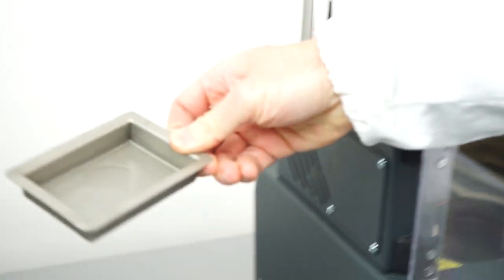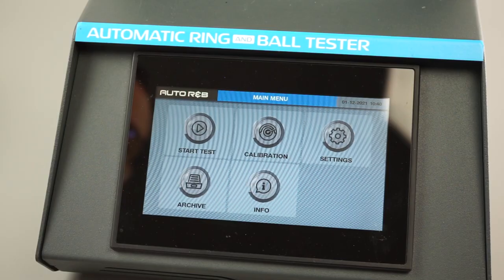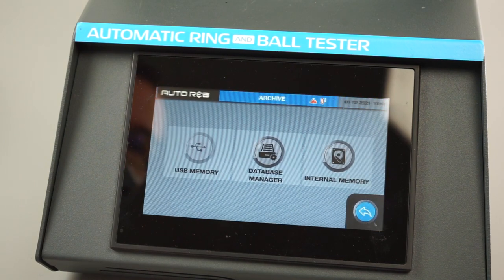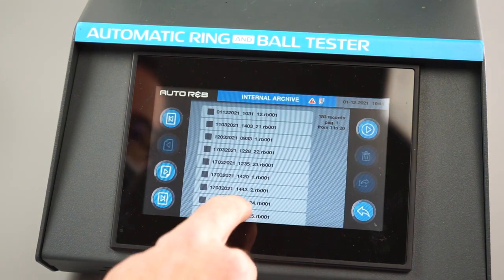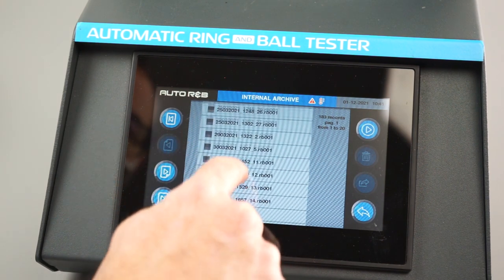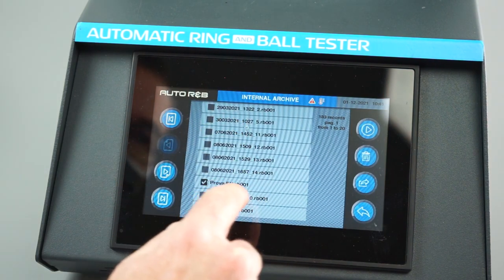The liquid in the drip tray can be recovered. The test is saved into the internal memory. It's possible to recall it and display the temperature by time rise to control the test conformity to standard specifications.